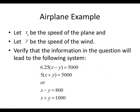Let x be the speed of the plane and y the speed of the wind. Then we can quickly formulate a few equations. The first one would be 6.25 into x minus y equals 5,000. That is the original flight. And the return flight, 5 into x plus y equals 5,000.